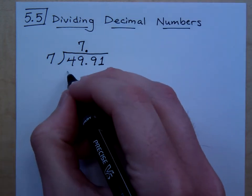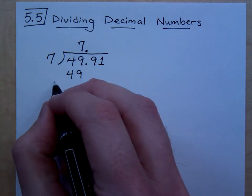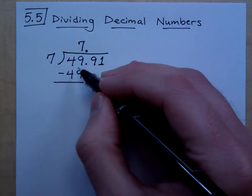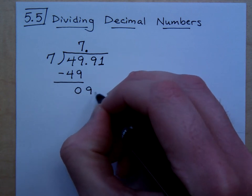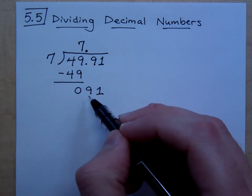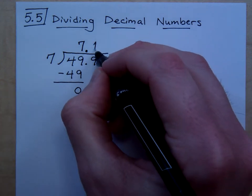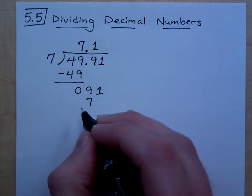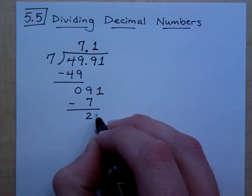So 7 times 7 is 49. So we subtract and we end up with 0. So we bring down the rest of the numbers, 9 and 1. Does 7 go into 9? Yeah, it goes in one time. So there's the 1. So 1 times 7 is 7. So when I subtract that off, I end up with a 2. Bring down the 1.